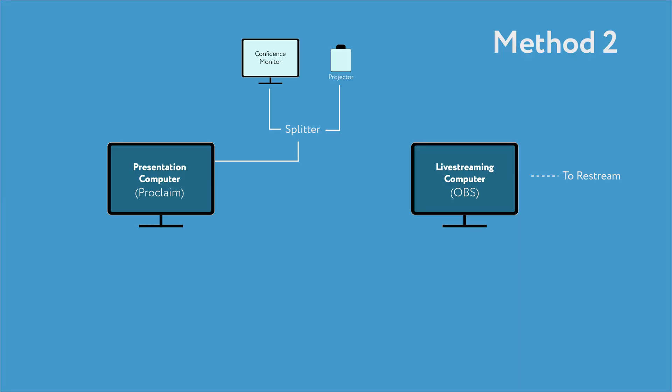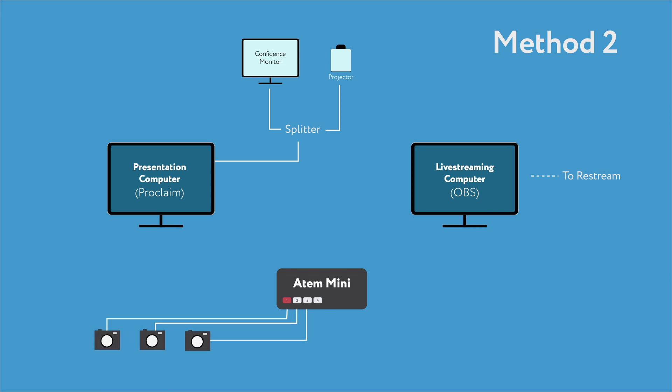Personally I'm a big fan of reliability, stability, and simplicity, which is why I think method two — the hardware method — is the way to go. The hardware method requires a video switcher like the ATEM Mini, around $300 US. We run three cameras into inputs one, two, and three of the ATEM Mini, and then run an HDMI cable from the presentation computer into input four. You might be thinking you only have one HDMI port — we had to use a USB-C to HDMI adapter to make this work. The ATEM Mini then connects to the live streaming computer via USB, so there's only one cable running to that computer.